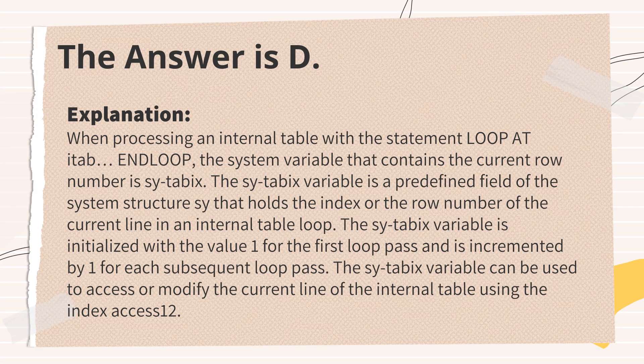The answer is D. When processing an internal table with the statement LOOP AT ITAB ENDLOOP, the system variable that contains the current row number is SY-TABIX. The SY-TABIX variable is a predefined field of the system structure SY that holds the index or row number of the current line in an internal table loop. It is initialized with the value 1 for the first loop pass and is incremented by 1 for each subsequent loop pass.